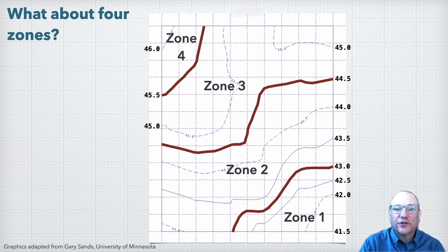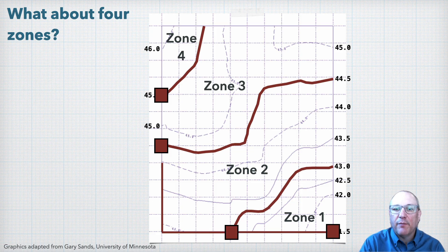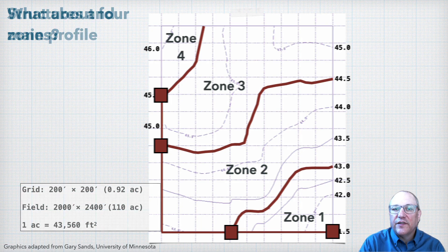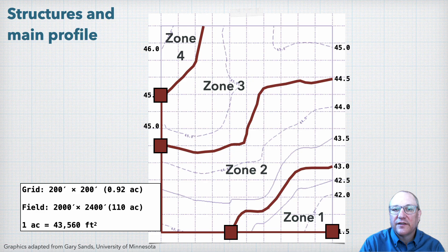Once we've located our control structures and the drainage main, we can come up with a profile of our main to get an idea of how our management zones will function. The grids on this field are 200 feet by 200 feet, and so the field then is 2,000 feet by 2,400 feet, or 110 acres.